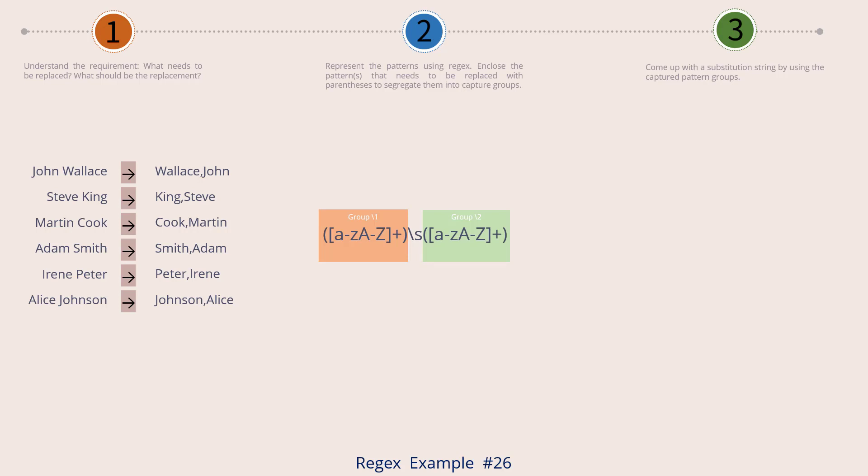If we keep moving from left to right again, next is the space represented by backslash s. We don't need to capture this because our final transformed string does not use this space. It only reuses the first name and last name from the original string. For this reason we do not enclose backslash s within parentheses. We just write it as such.